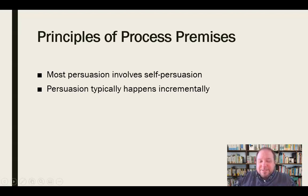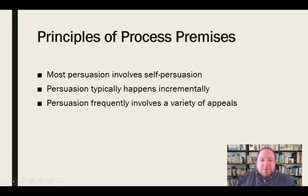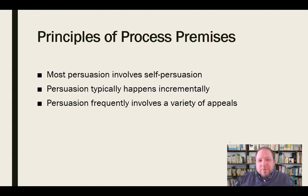Persuasion also happens incrementally — it doesn't usually happen all at once. There's not a light bulb that goes off and suddenly you are just persuaded. You hear one good argument and that's probably not enough to change your mind. Persuasion happens over time incrementally as we hear things, process things, and understand things — slowly in little bits and pieces. We also need to understand that effective persuasion frequently involves a variety of appeals — emotional, logical, credibility-based — rather than just one thing.